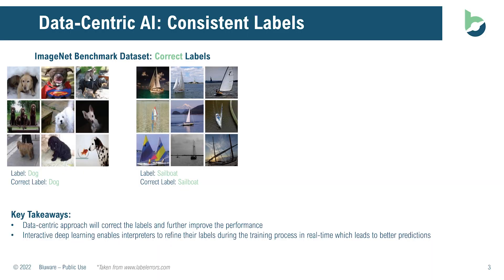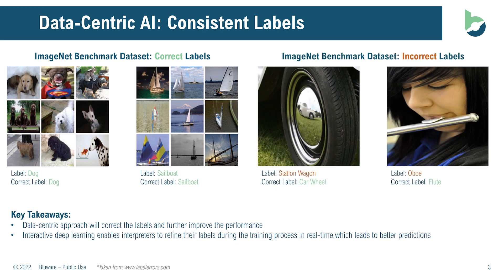Let's dive a little deeper into what that means. We'll start with an industry-recognized dataset, which is ImageNet — commonly used as a benchmark for many current algorithms being published today. ImageNet is composed of billions of different images, and the labels are mostly true. Here we have several labels of dogs, and we see that they are, in fact, dogs. We also have sailboats, and we see that they're, in fact, sailboats. But here's where you have some limitations with the model-centric approach.